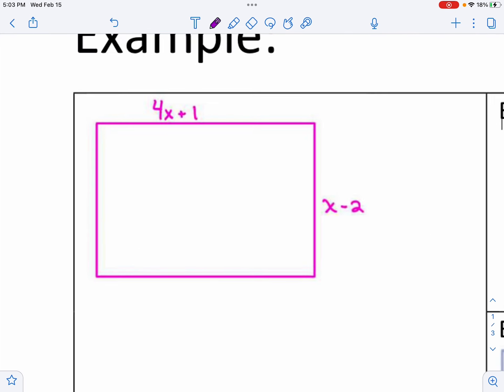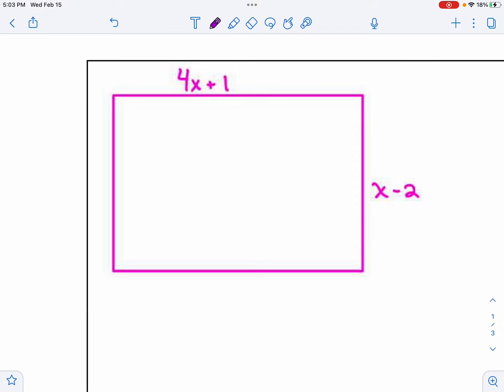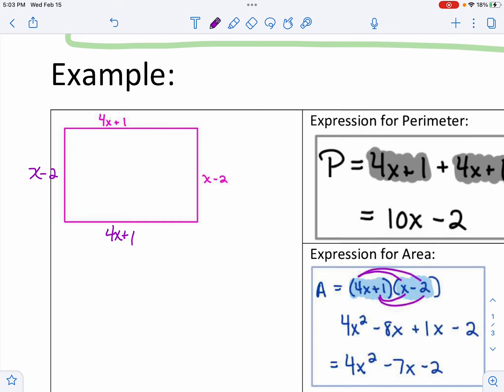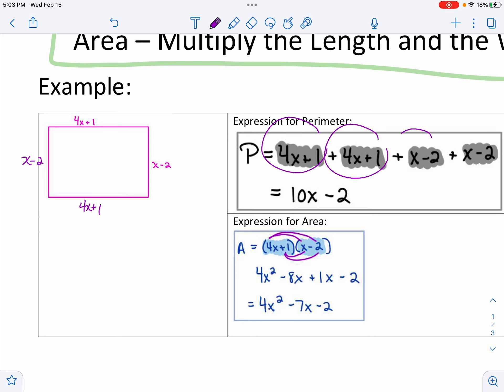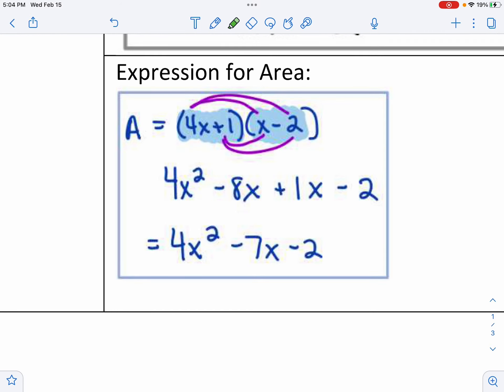I need you to recall today that perimeter for middle school is adding all the sides together of a rectangle and area is multiplying the length and the width. So here's your example. Let's say we have this rectangle and we don't know the actual side lengths, but we know it's like 4x plus 1 and then x minus 2. So the perimeter is all four sides added up. And then area, you do your 4x plus 1 times your x plus 2 and then you distribute it together the way we learned how.